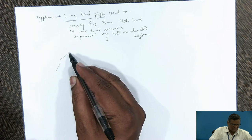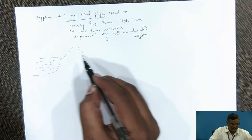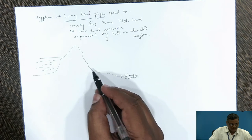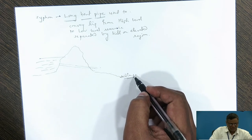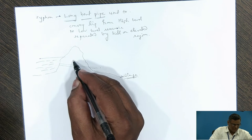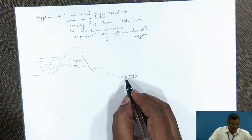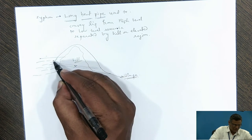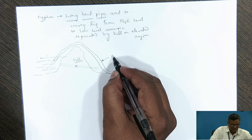Consider a hill area where water is stored from rainwater, and at the bottom side somewhere a village is located with a requirement for water. Directly laying pipes from the upper level reservoir to the lower level is not possible when a hill or elevated region separates them. In that case, we make use of the siphon — a long bent pipe going from the upper reservoir, over the hill, down to the lower reservoir.